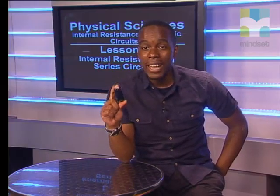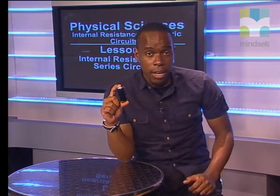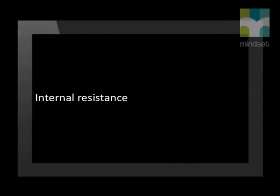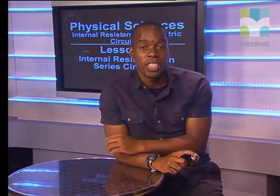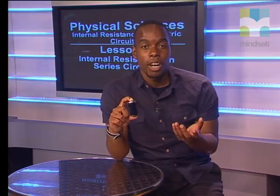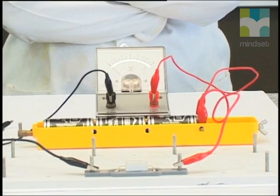The EMF of a cell is the maximum amount of energy which the cell can supply. However, cells, just like other components in an electric circuit, have a resistance. This resistance is known as internal resistance. The existence of internal resistance is found when we measure the potential difference across the cells. If this is less than the EMF of the cells, it is because of the internal resistance of the battery. Let's look at a demonstration.